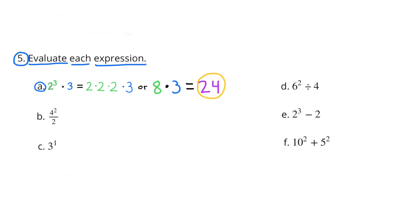Number 5. Evaluate each expression. A. 2 to the 3rd power times 3. That's 2 times 2 times 2 times 3. Or 8 times 3. And 8 times 3 is 24.